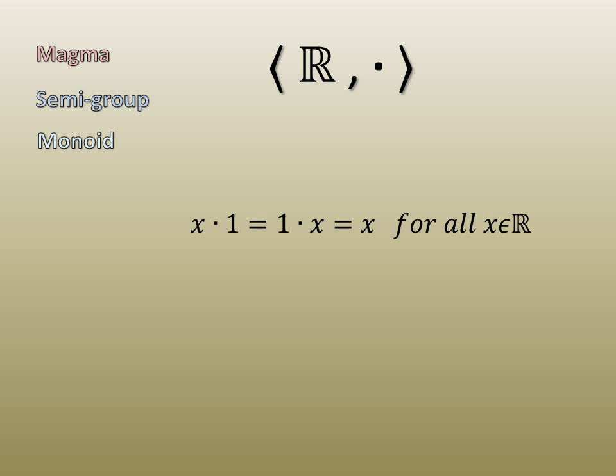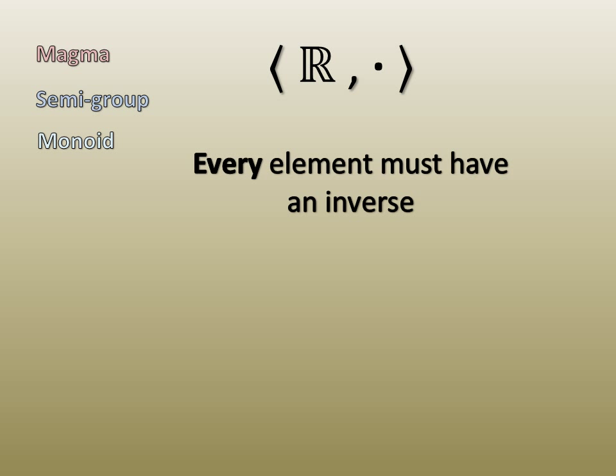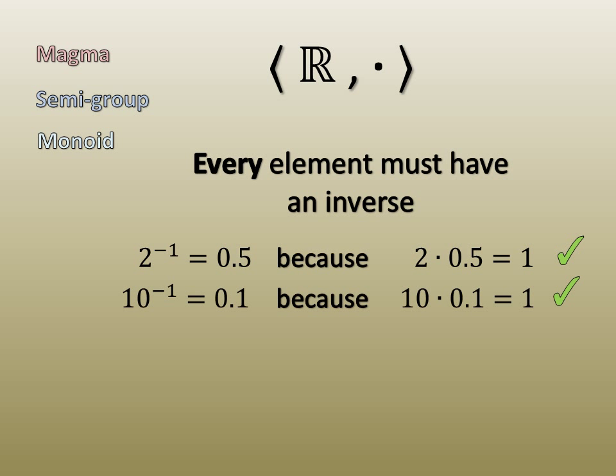This, however, is as far as we can go. Invertibility means that for every element, there is an inverse element. For two, it would be one-half, and for ten, it would be one-tenth. Zero, however, does not have an inverse. This single counterexample means a monoid doesn't have invertibility. It is, however, the only counterexample, so removing the element zero, we would have a group.